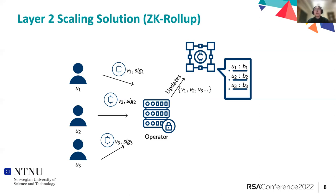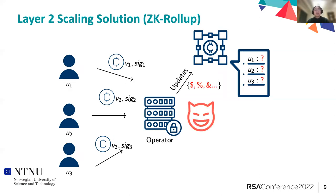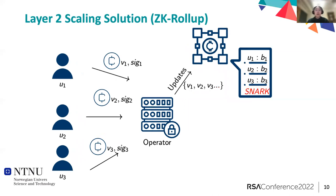When we introduce such an operator into the system, we always need to think: what if this operator is malicious? It might just update something random directly to the blockchain, and that would be really bad. To solve this problem, ZK Rollup uses a SNARK — a proof computed by the operator to prove that it did all the computation correctly. The smart contract will verify the SNARK, and only if it's correct will it accept the operator's update and record the users' new balances.